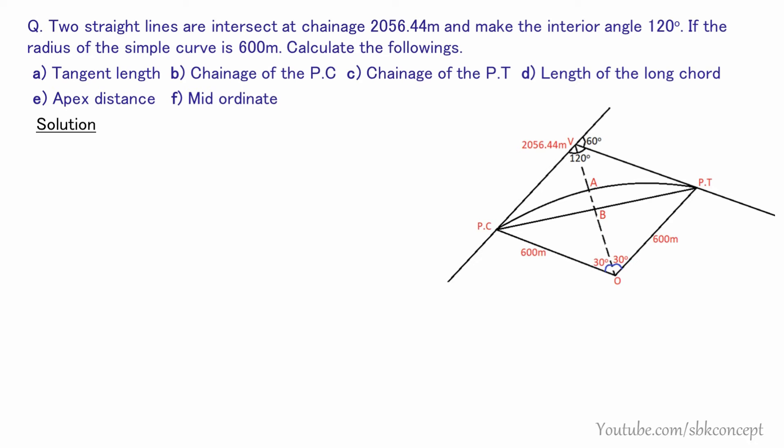Now for the solution. The tangent length formula is T = R × tan(θ/2). With radius R = 600 meters and deflection angle θ = 60 degrees: T = 600 × tan(60°/2) = 600 × tan(30°) = 346.41 meters.